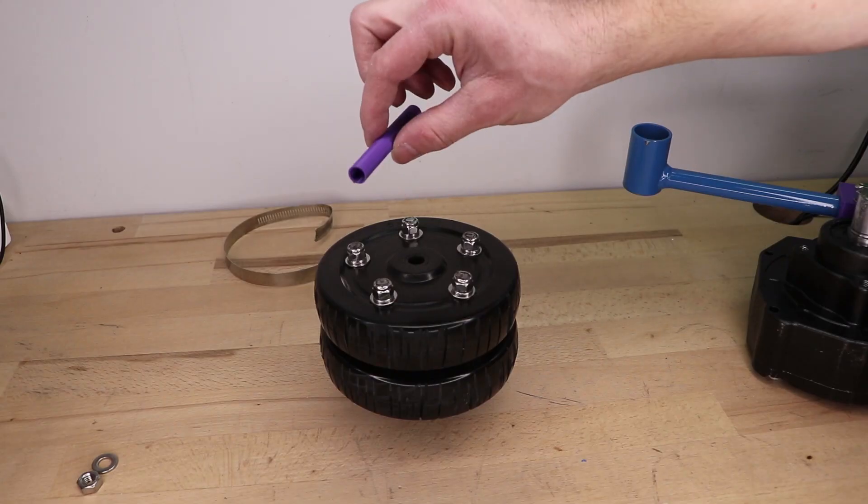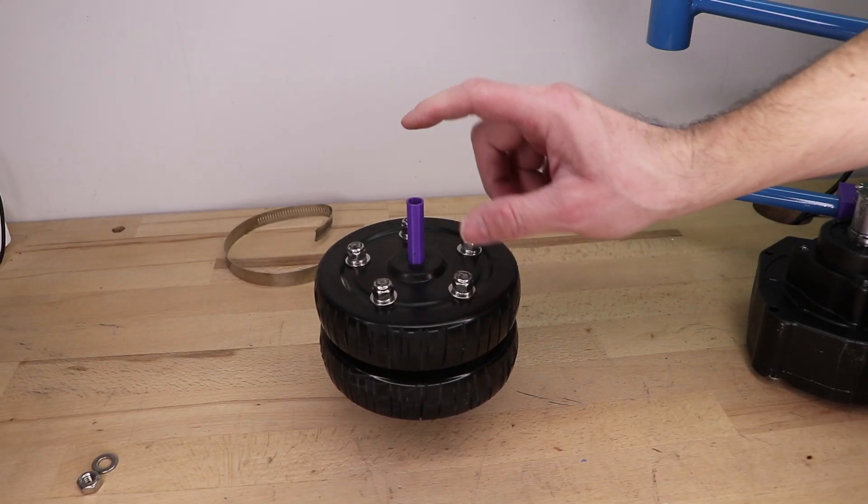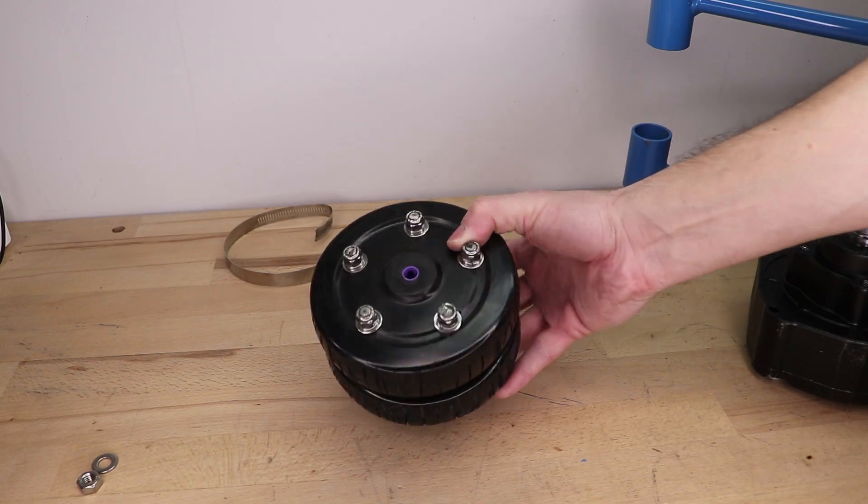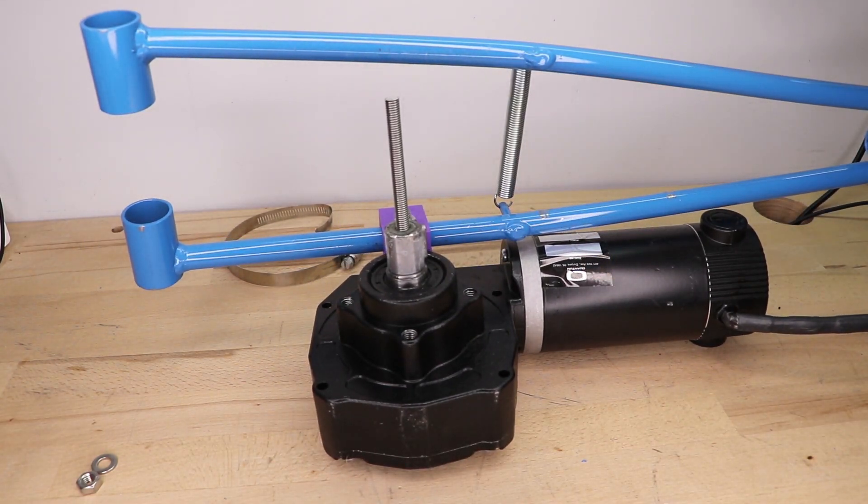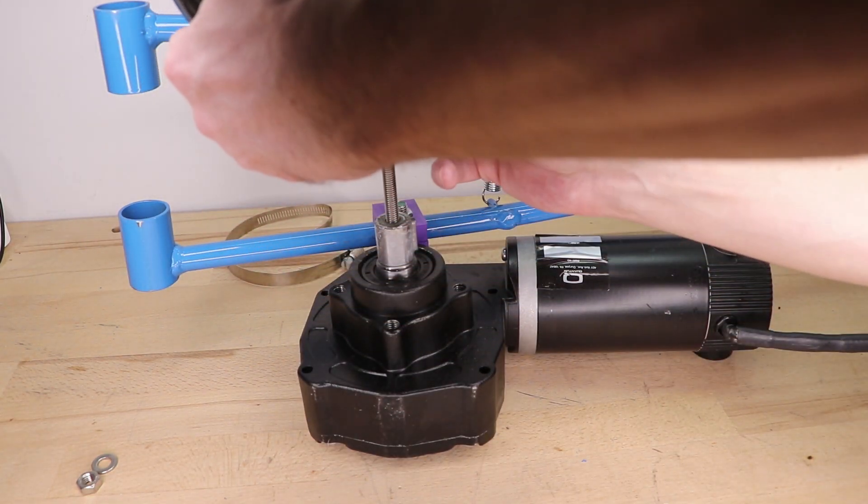Then insert the reduction tube into the tiles and mount everything to the motor.